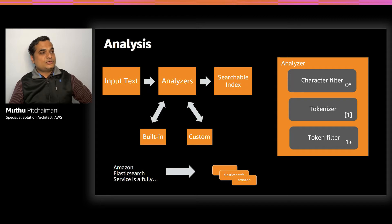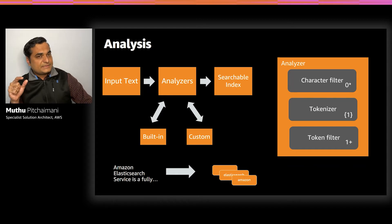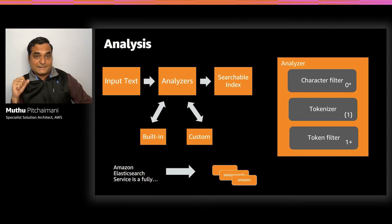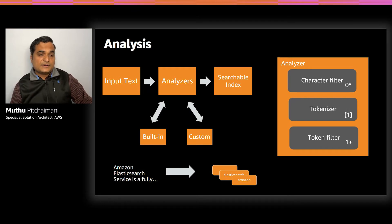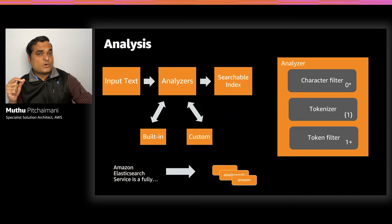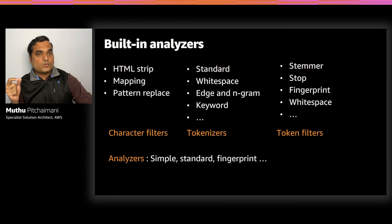The final step is the token filter, which functions similarly to a character filter but operates on tokens by adding, removing, or changing them. What makes Elasticsearch so powerful is that each component of this analyzer is completely configurable, and you can specify a fully custom analyzer. In addition, Elasticsearch also comes with a rich set of built-in analyzers ready to use — for example, the simple analyzer, fingerprint analyzer, and standard analyzer. Some popular built-in tokenizers include edge ngrams and ngrams, whitespace tokenizer, keyword tokenizer, and so on.